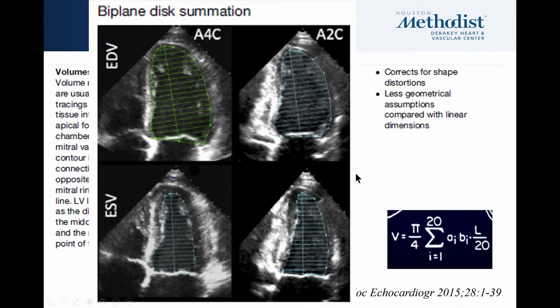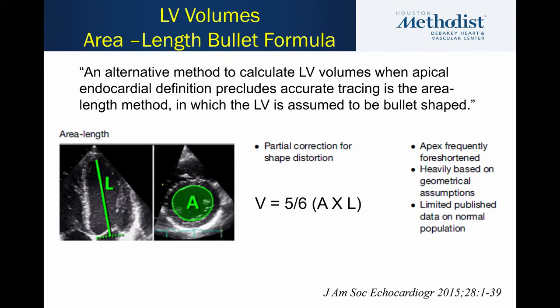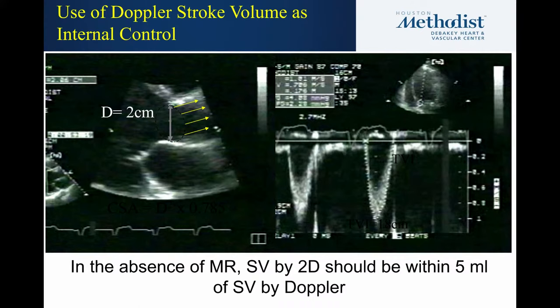There is an alternative method when image quality is not the best: the bullet formula. It can be used if the ventricle has no significant regional wall motion abnormalities — normal contraction or global hypokinesis, but no regional abnormalities. You use the long axis in an apical view and a short axis at the level of the papillary muscles in diastole and systole. The formula treats the LV chamber as a bullet: volume = 5/6 × area in the short axis × long axis. We also recommend internal controls: if there's no significant mitral regurgitation, the 2D stroke volume should be similar to the LV outflow stroke volume.